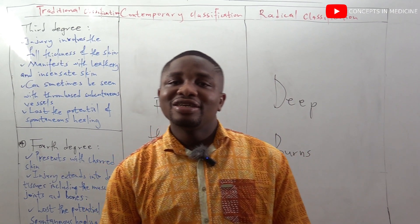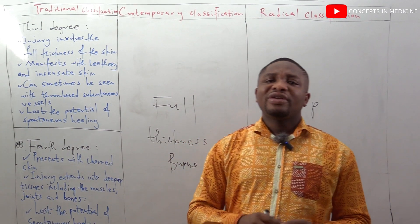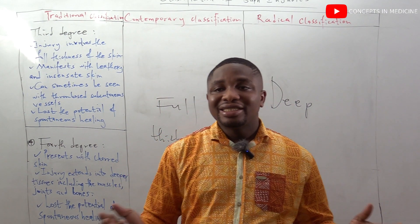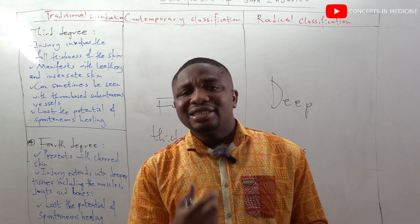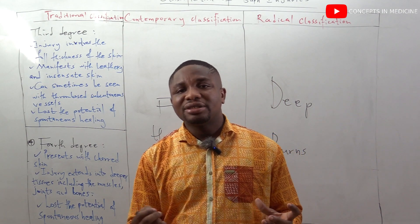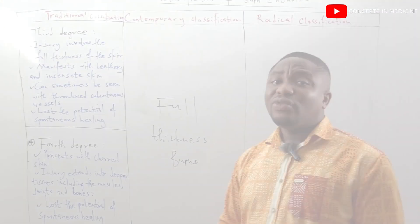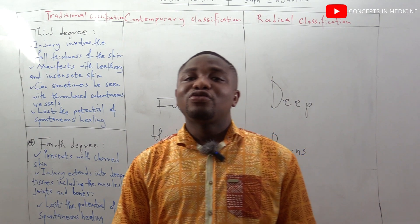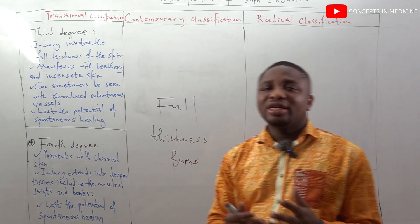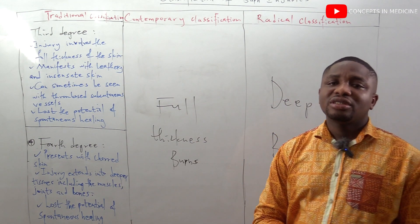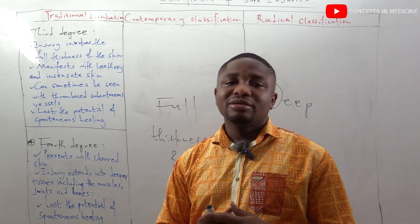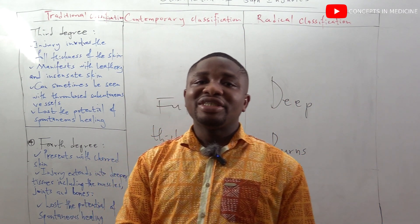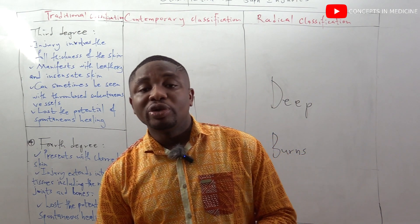For the fourth degree burns, they present with charred skin — like charcoal — and extend into deeper tissues including the muscles, joints, and bones. Just like third degree burns, fourth degree burns have lost the potential of spontaneous healing. In the contemporary classification they correspond to full thickness burns, and in the radical classification they belong to deep burns, requiring surgical intervention with no ability to heal spontaneously.